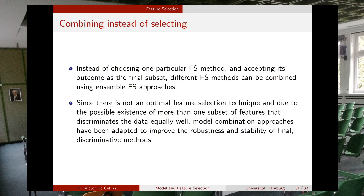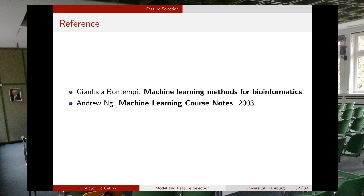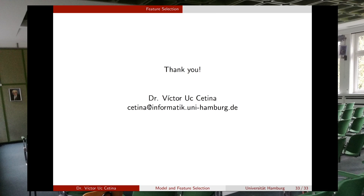Since there is no optimal feature selection technique, and because more than one subset of features may discriminate the data equally well, model combination approaches have been adapted to improve robustness and stability. You can use different filter selection methods to generate different subsets and combine all these features in your final feature vector to increase model performance. These are the most common methods in feature selection, model selection, and cross-validation.